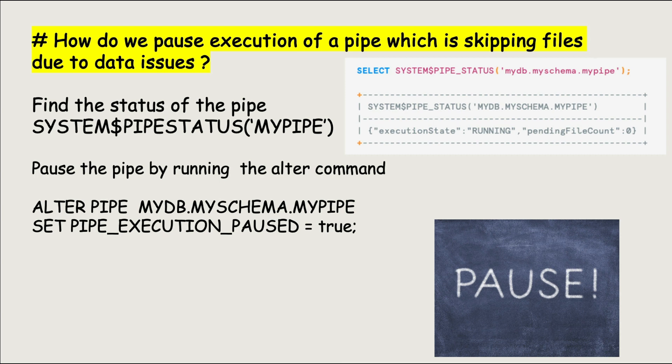The way we pause the pipe is by running the ALTER PIPE command, and the execution status will move to paused from running. We can then go about, investigate everything, reach out to the vendor, resolve the issue, and then move back to running state. With that, we conclude this question.